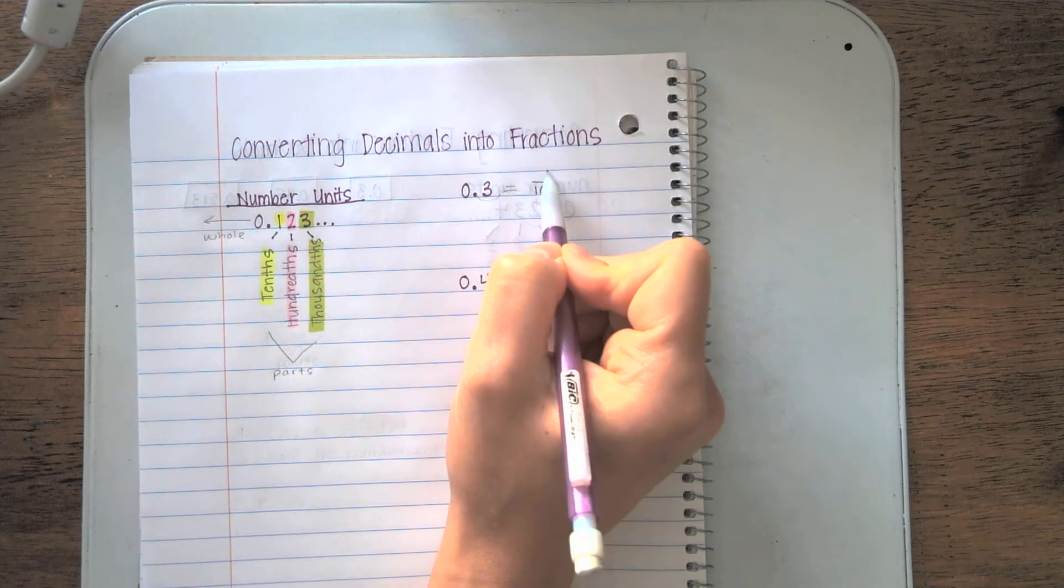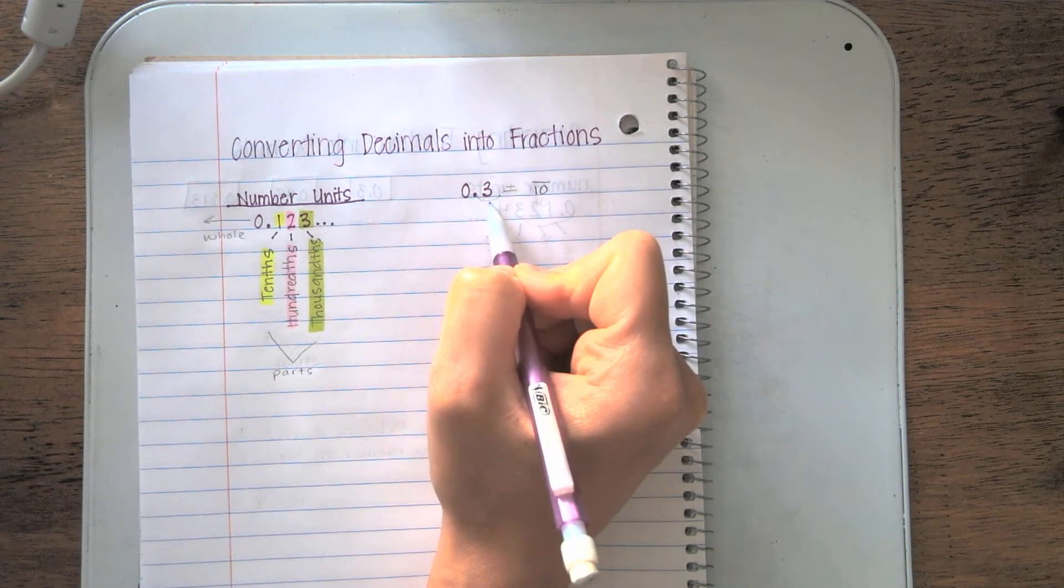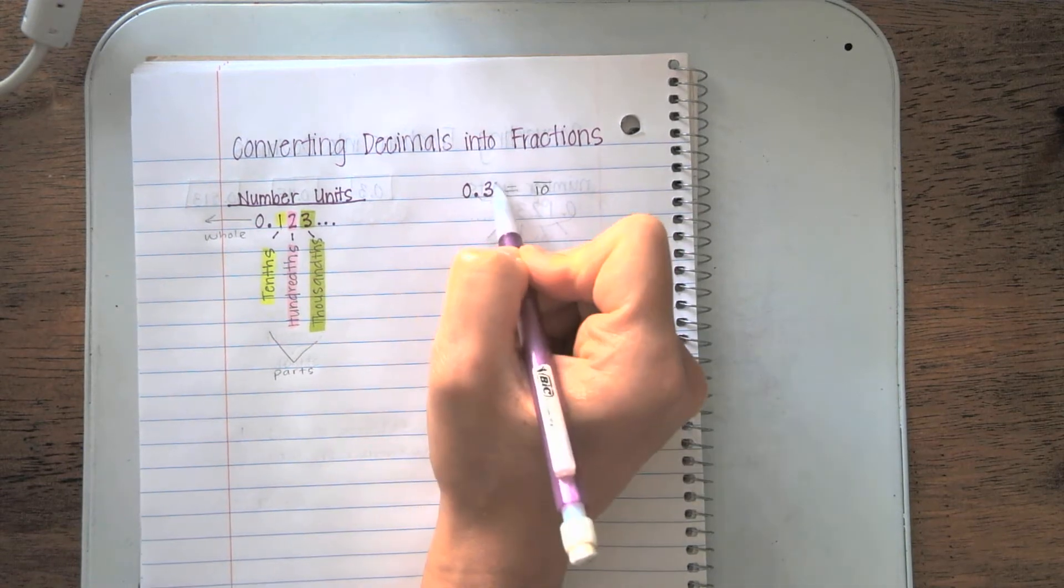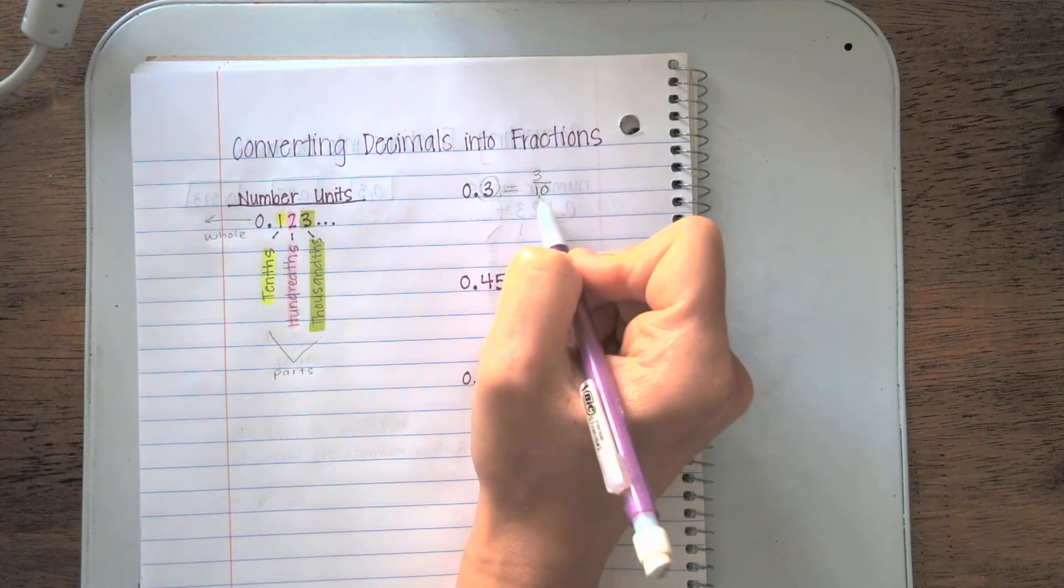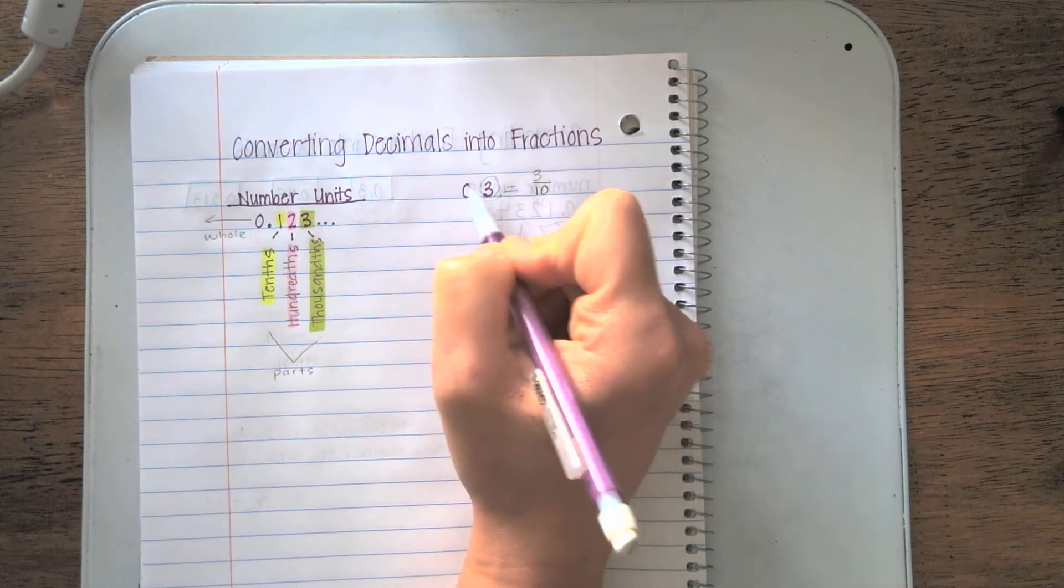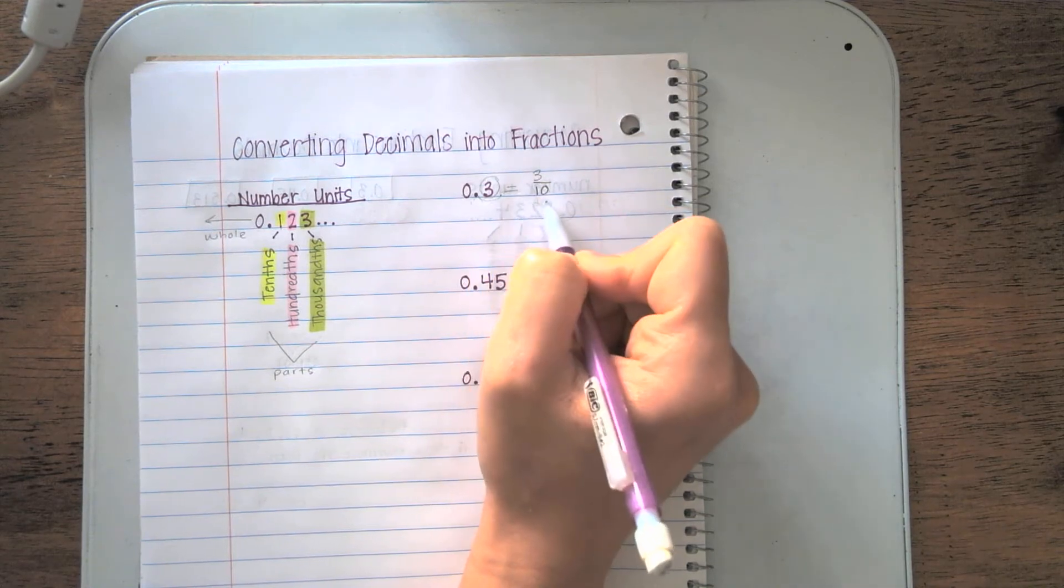Now, I need to figure out my numerator. That's pretty easy. The numerator is the digits to the right of the decimal. I only have one, and that one is 3. So 3/10 is the same as my decimal here, 0.3. Both these numbers are equal.